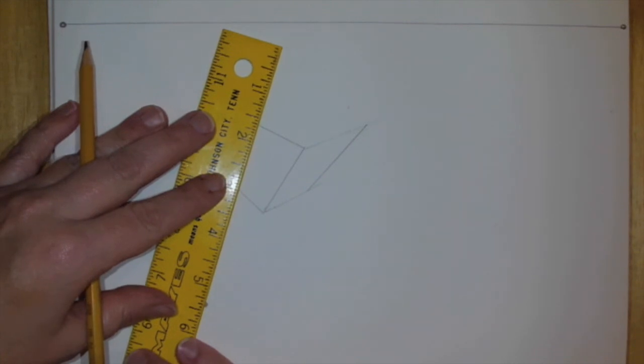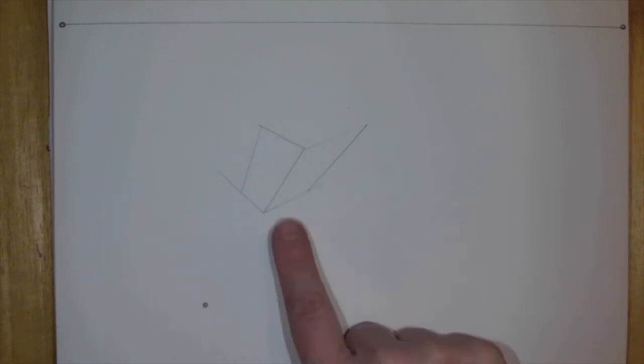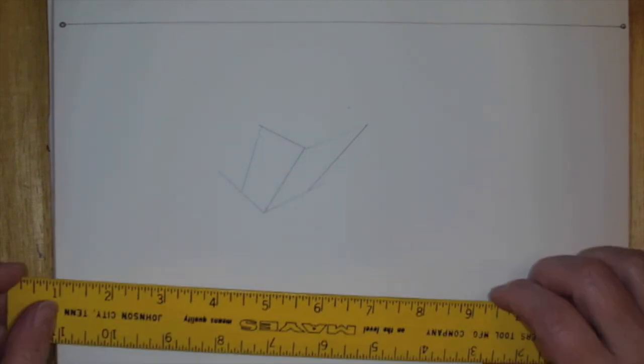Then I'm going to take my ruler over and go to the other side of that first vertical line and make another line. So now I've got the corner and the two back sides.